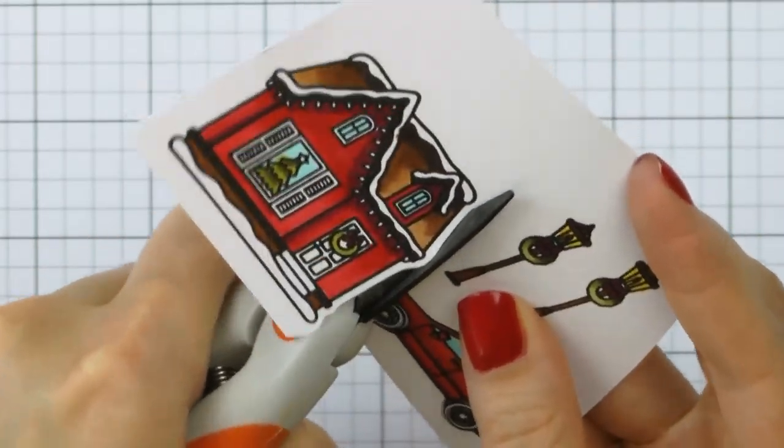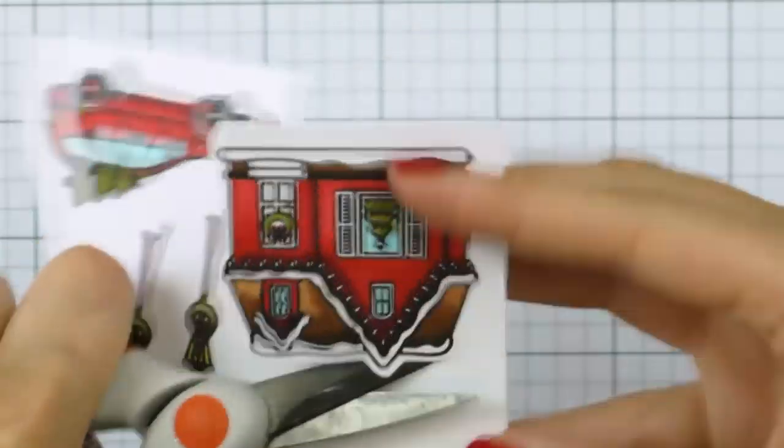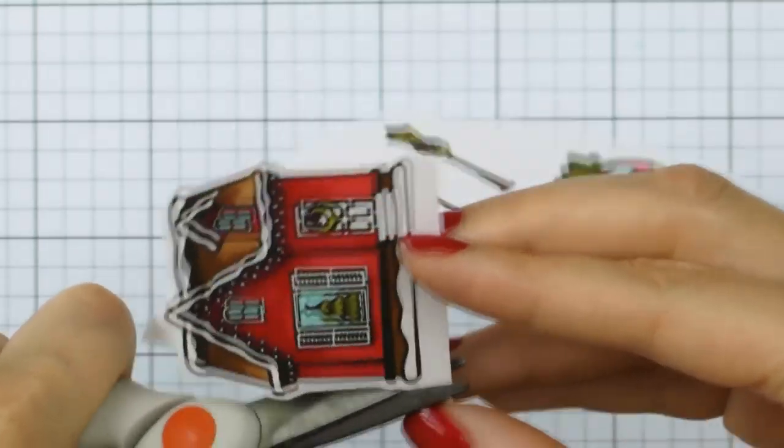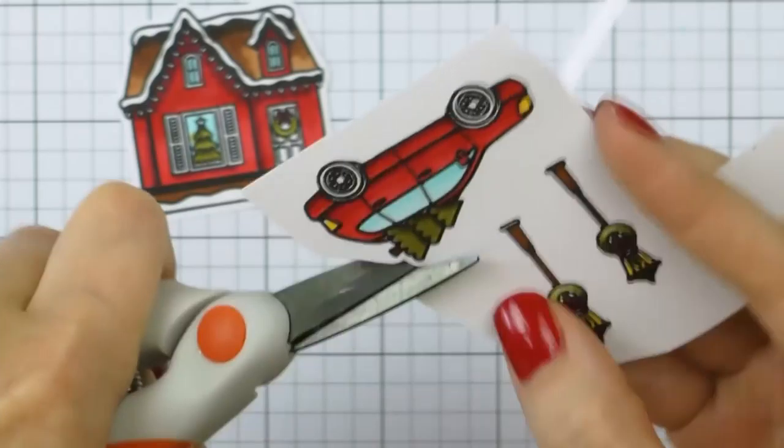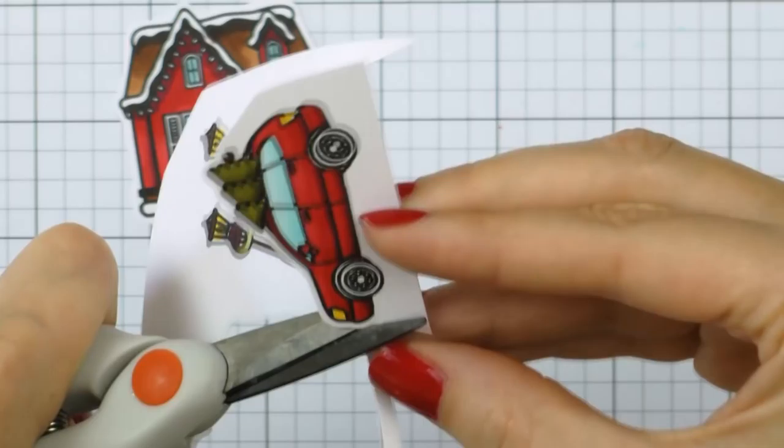There are coordinating dies available for the stamp set, but I don't have them, so I just used my scissors and cut my images out. While these are small images, they weren't too hard to cut out mainly because I was using a good pair of scissors and I did my stamping on thinner paper.